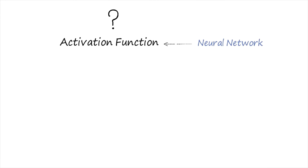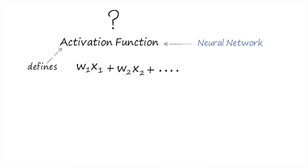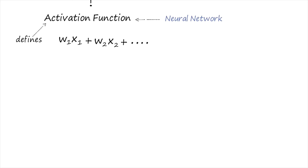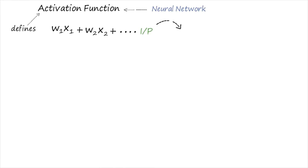Whenever we are talking about an activation function in a neural network, it defines how the weighted sum — that is, weight into input, plus another weight into another input — is transformed into an output from a node. This is the main concept.